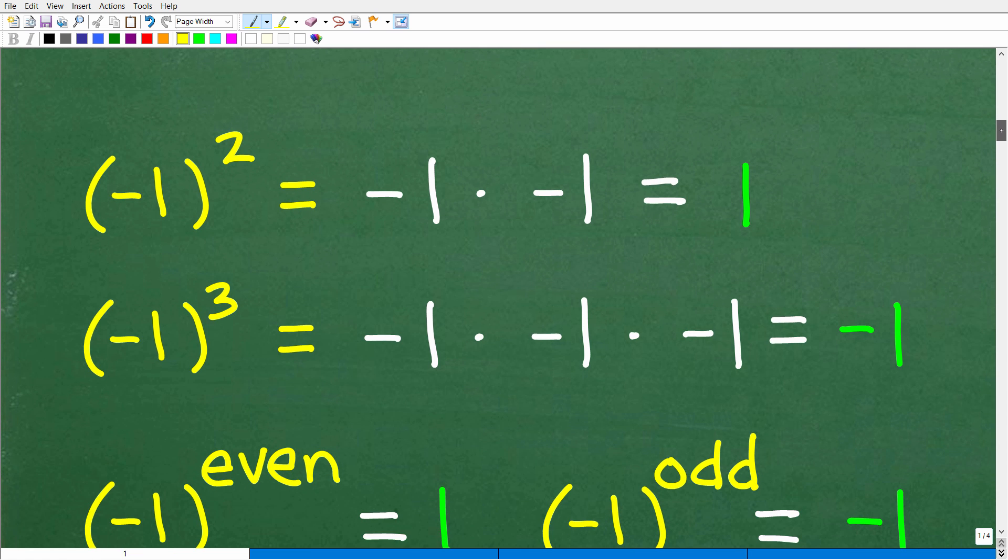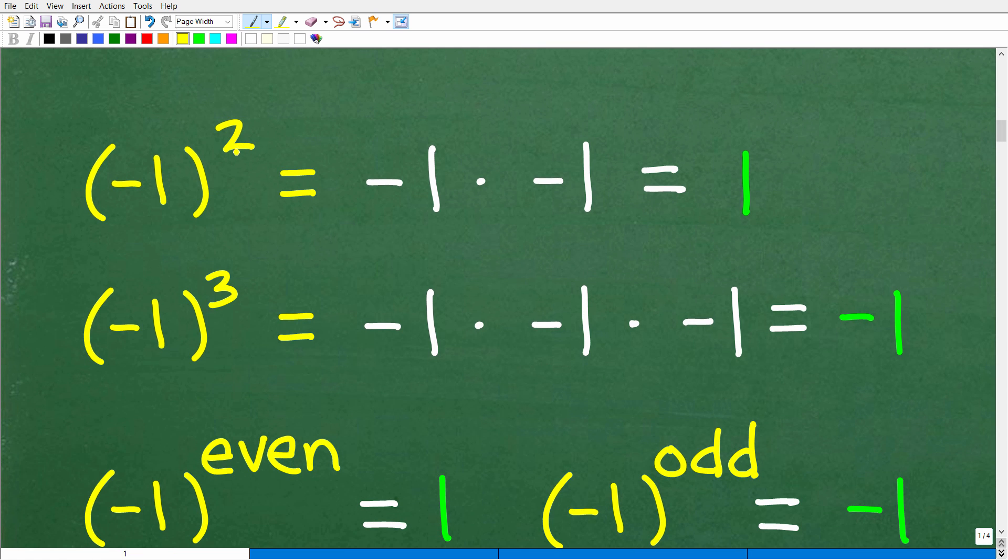All right. So here we have negative one squared. Now, that's obviously negative one to an even power. So we have negative one times negative one. That is a positive one. All right. How about negative one cubed? Well, this is negative one to an odd power. So that would be negative one times negative one times negative one. So here we have a positive one times a negative one. That's negative one.